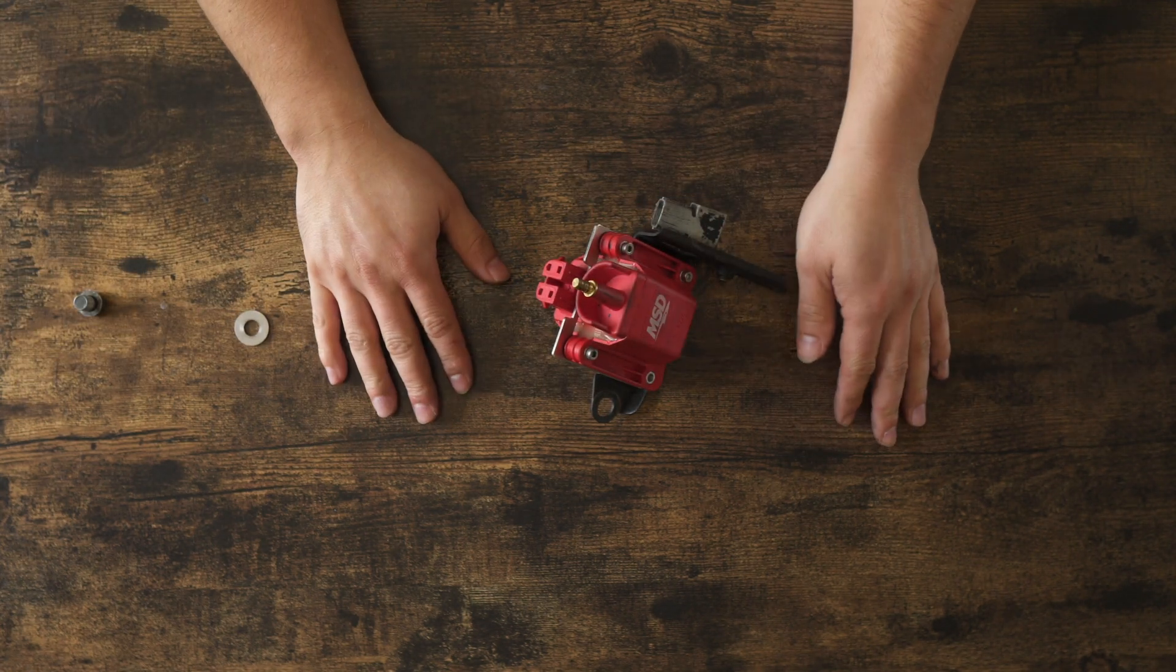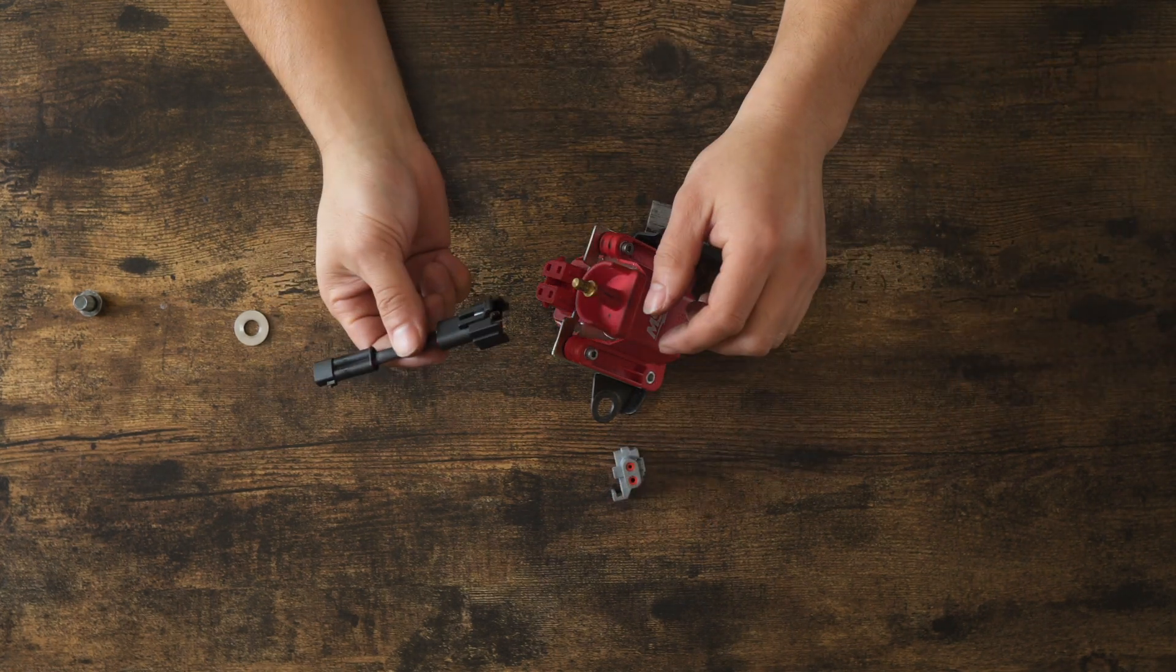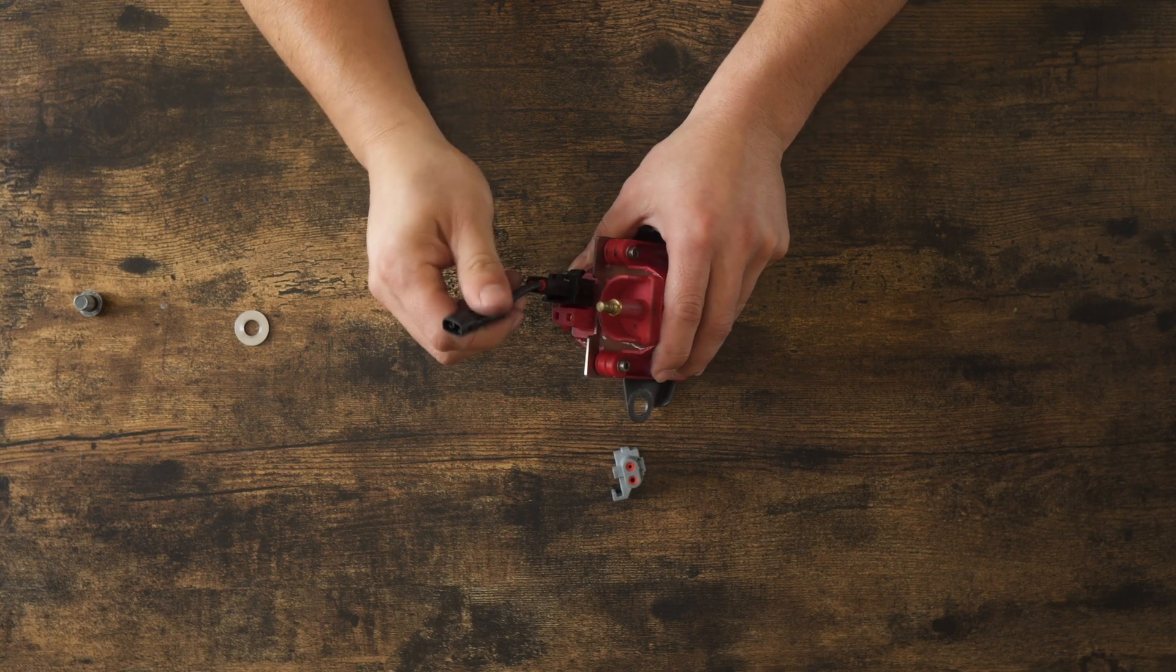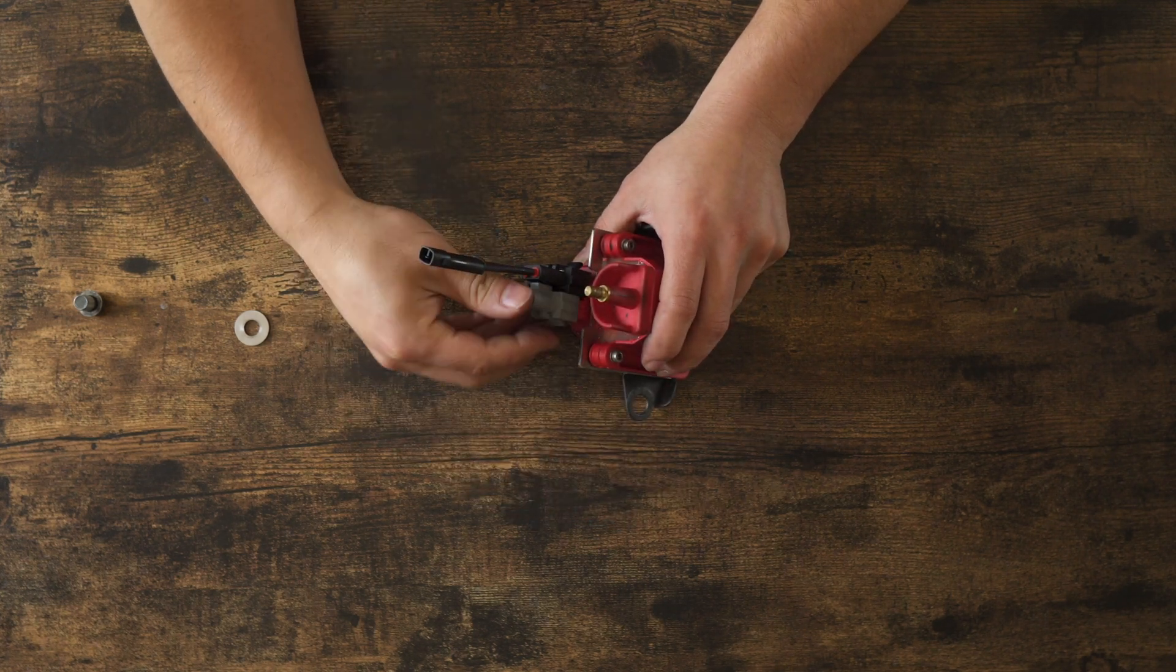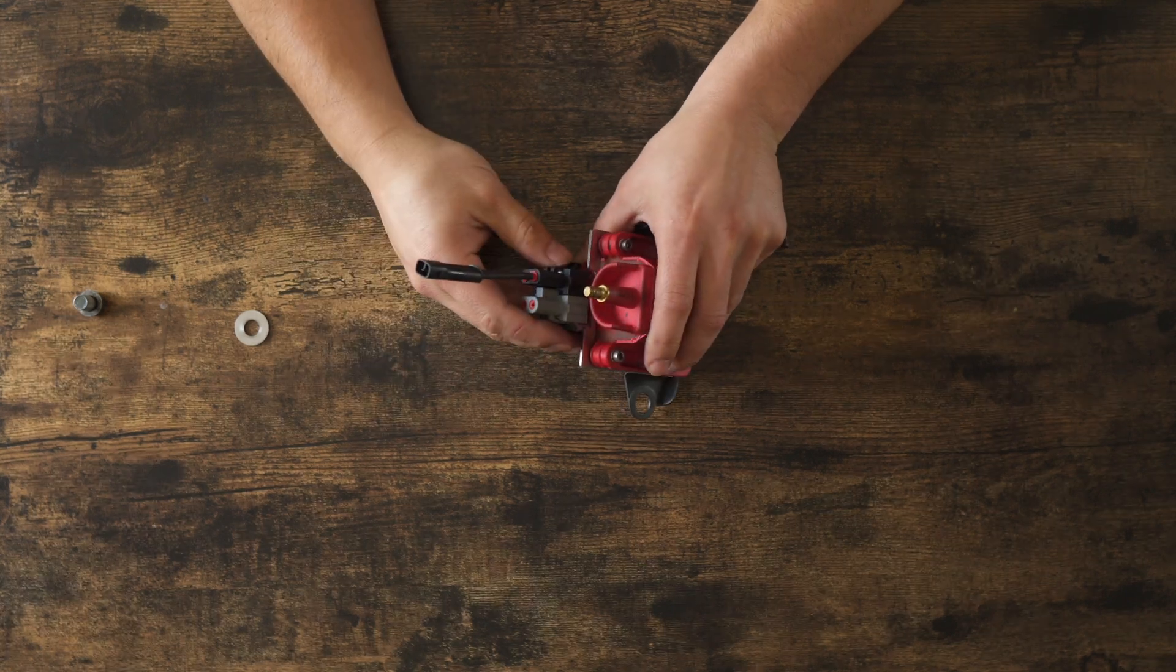And just like the passenger side, we have our black connector wire goes in here. Again, plug and play into the OEM harness, no cutting, no modifications. You put in your gray connector to protect the other two terminals.